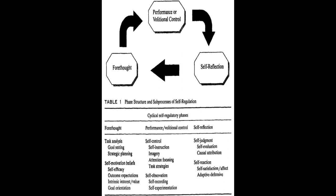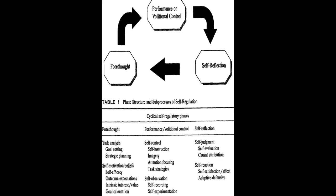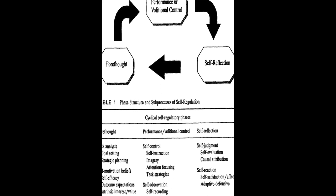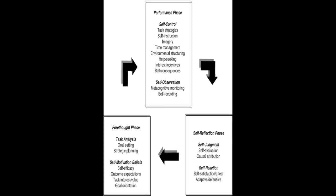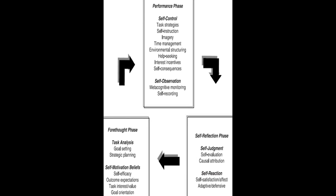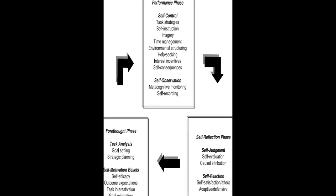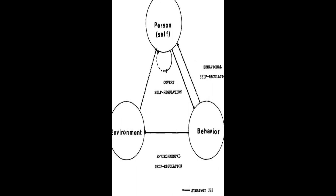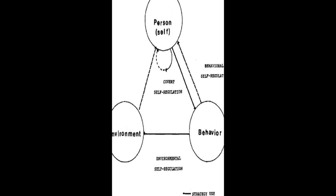Six models of SRL are analyzed and compared in this paper: Zimmerman, Boekaerts, Winne and Hadwin, Pintrich, Efklides and Hadwin, Järvelä, and Miller. Each model is explored in detail, including history and development, description, empirical support, and instruments constructed based on the model.